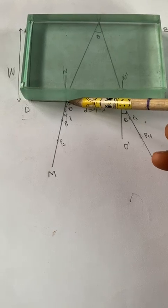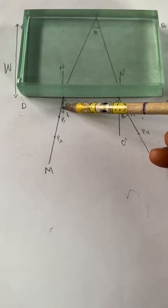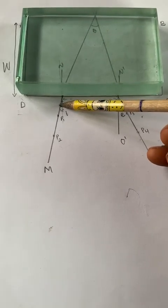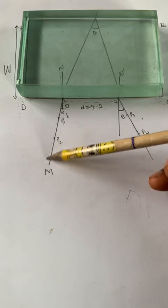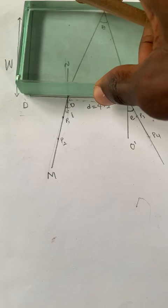Before we replace the prism, we measure an angle 10 degrees away from this normal, then we draw a straight line on that and fix two pins on that line. Then we now place the prism back.